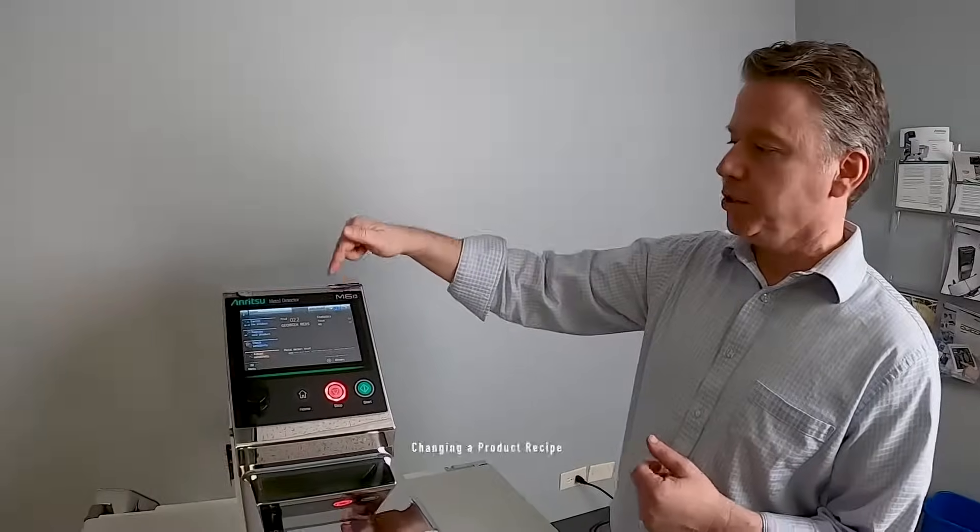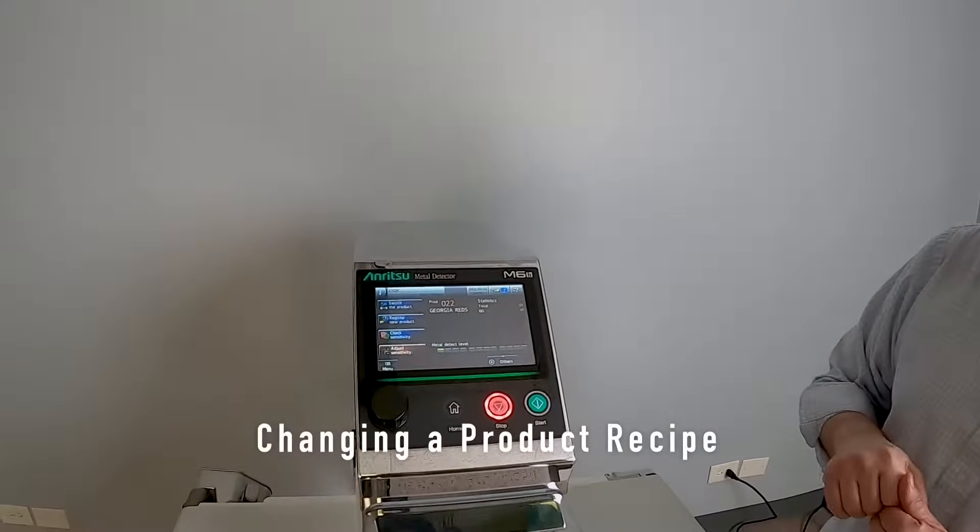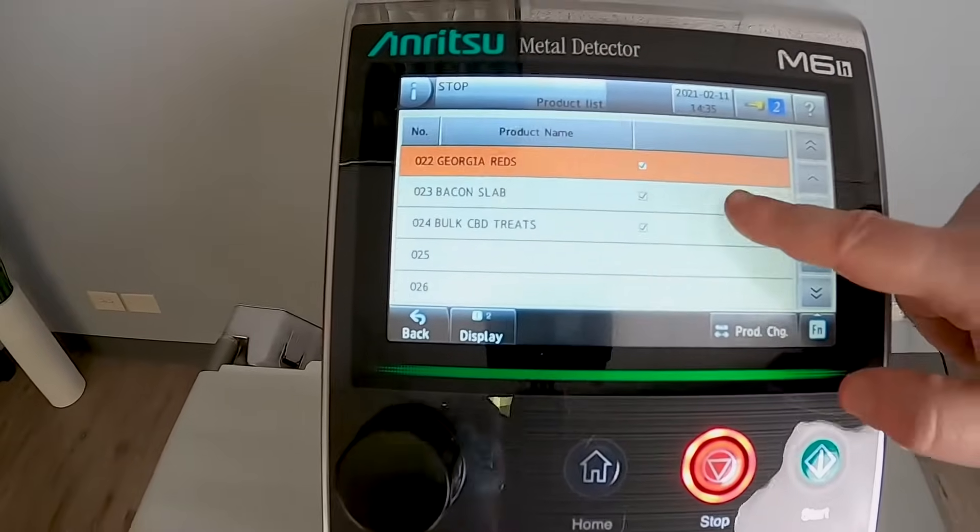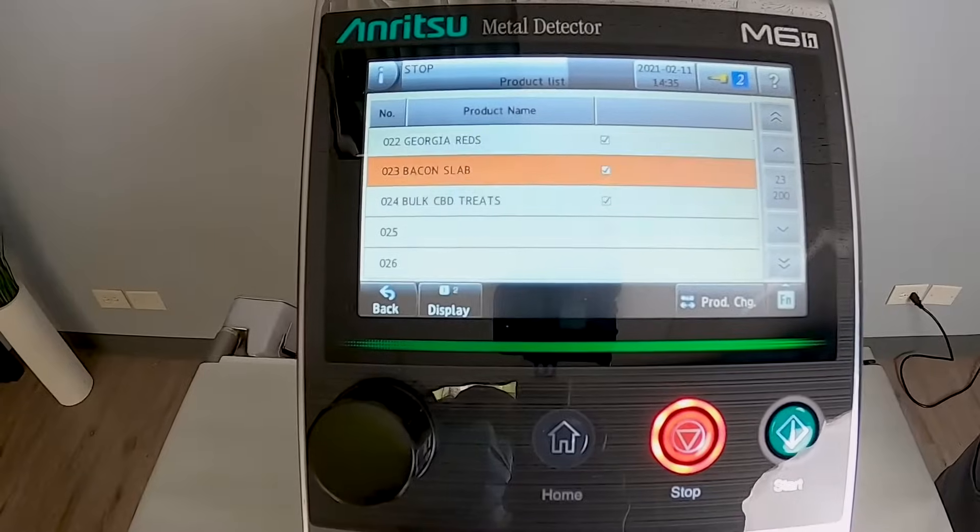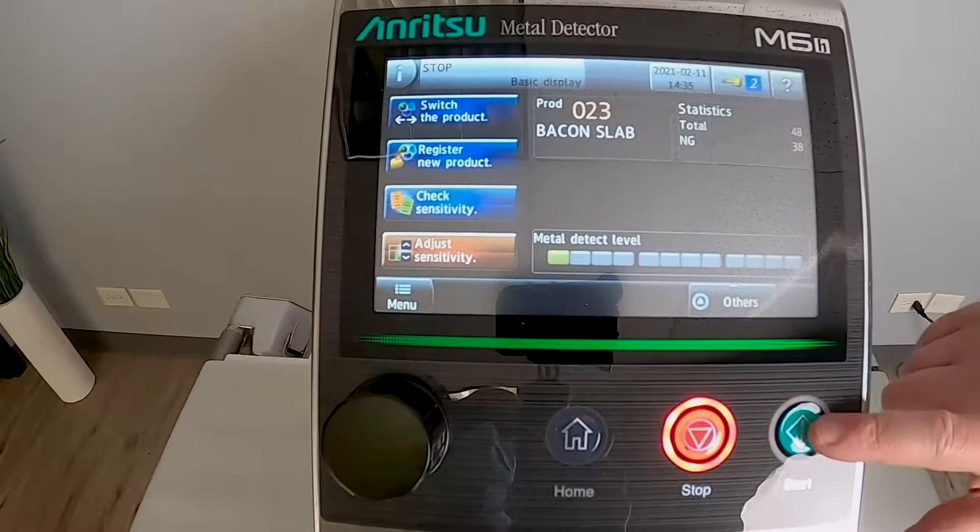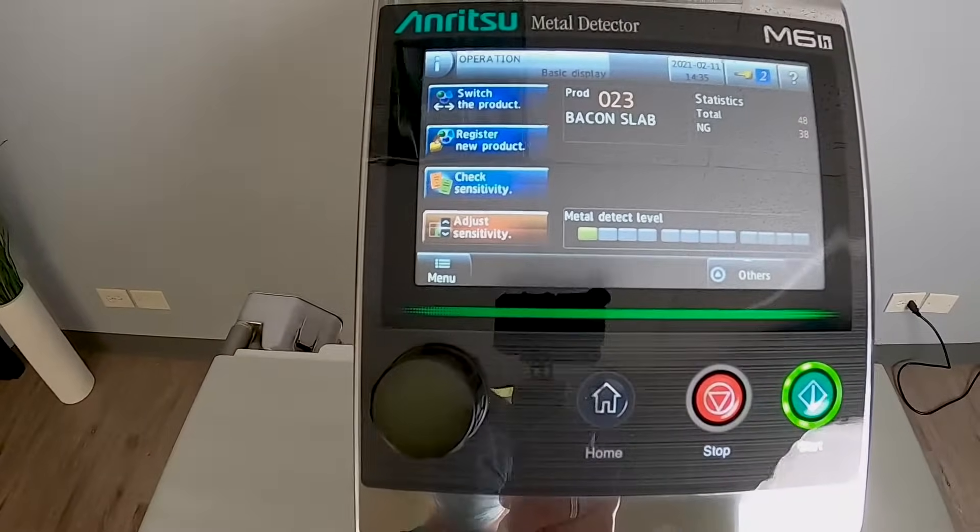It's very easy. If I wanted to change a product as an example, I can see I'm on product number 22. I can just hit it, go to a different product, hit product change, system will automatically change over and be ready to go. So all I have to do is hit start and we're off and running.